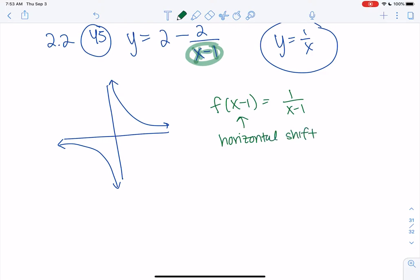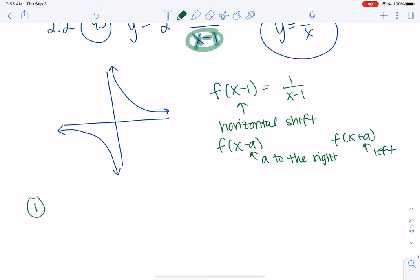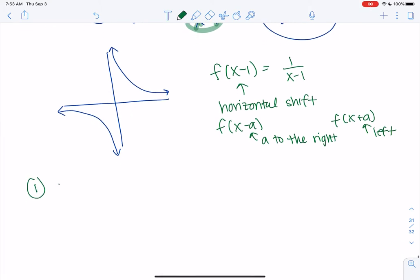And we learn that it's f of x minus a. It goes to the left or right, so a to the right. If it's plus, we go to the left. So in this case, our first transformation would be shift to the right by 1.